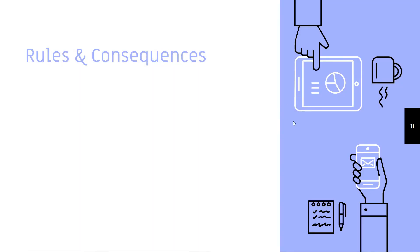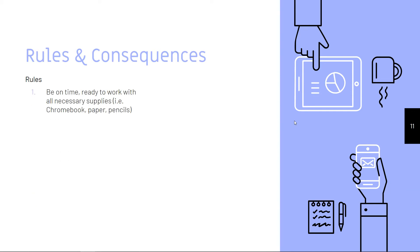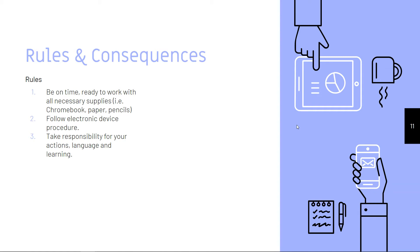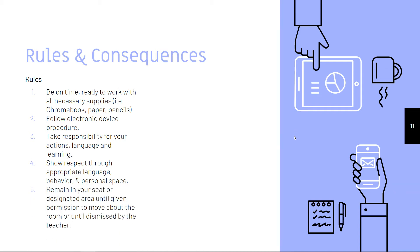These are generalized classroom rules. Miss Pierce may come up with some different ones when she gets back, but basically: be on time, ready to work, and with all necessary supplies such as your Chromebook, paper, and pencils. Follow the electronic device policy detailed later. Take responsibility for your actions, language, and learning. Show respect through appropriate language, behavior, and personal space, and remain in your seat or designated area until given permission to move.